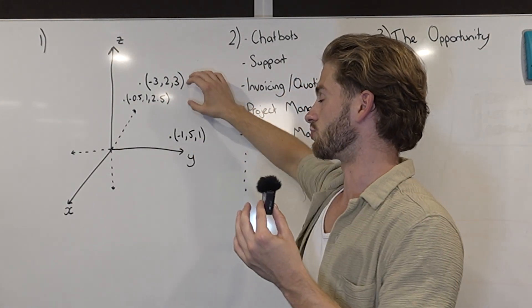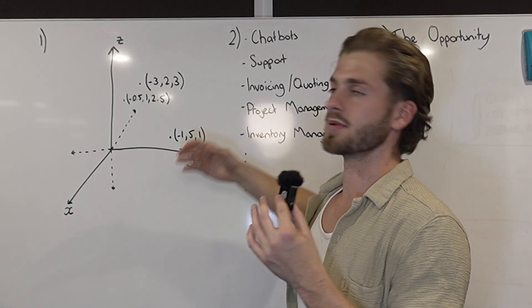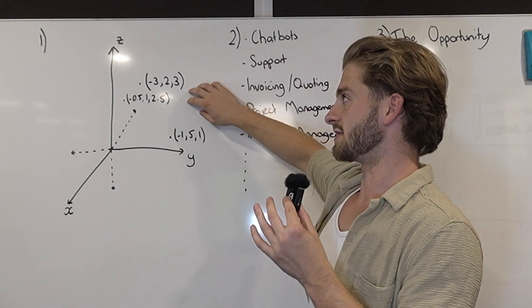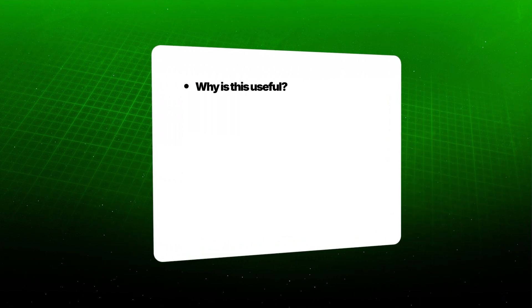They call it semantic search or semantic meaning and be able to convert that into a number to accurately draw lines between these giant numbers, which really are texts, and be able to return responses. So that's the behind the scenes of how these vector databases work.